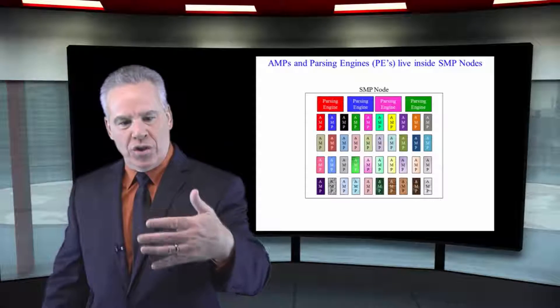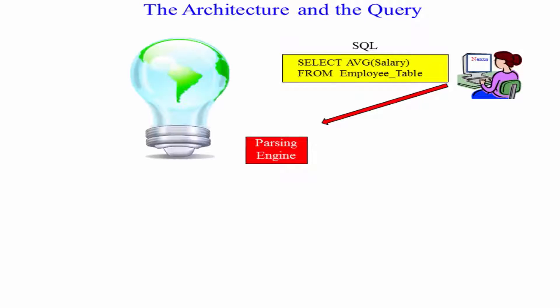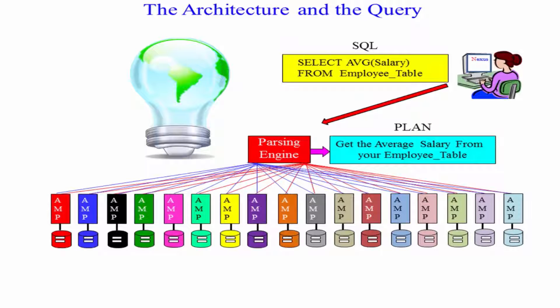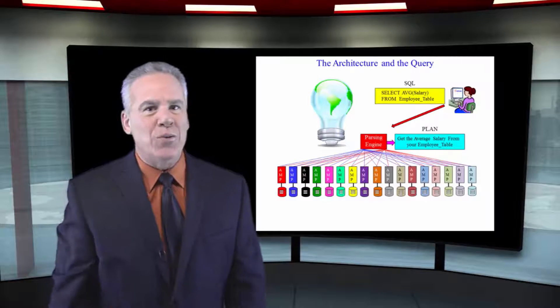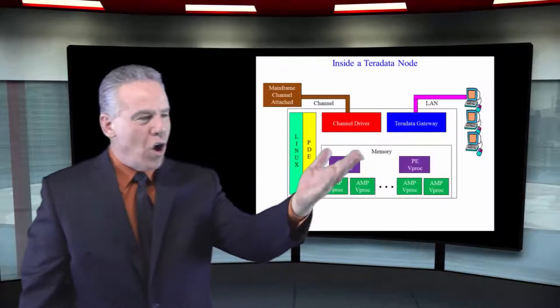The processes of the parsing engine are to take the SQL, come up with a plan for the amps. The processes for the amps are to do whatever the parsing engine tells them to do, and read and write their data to and from disk.